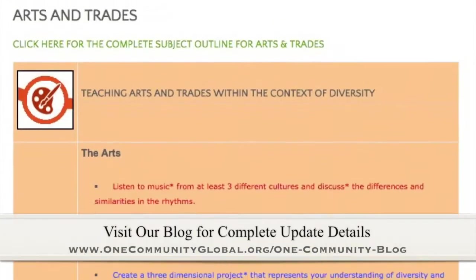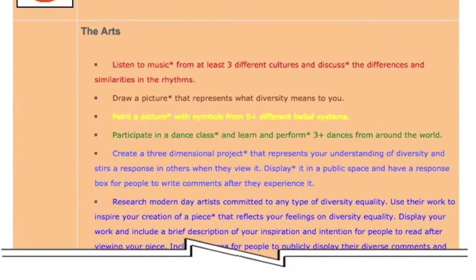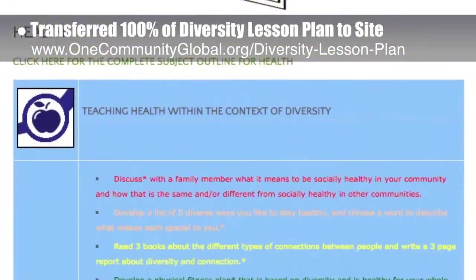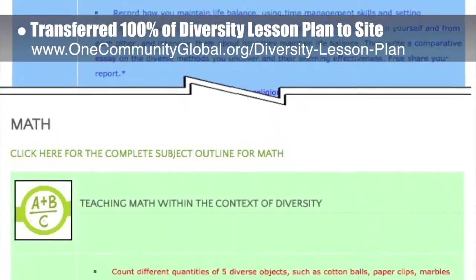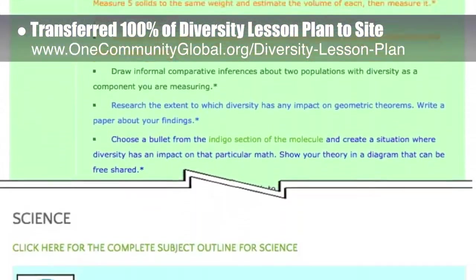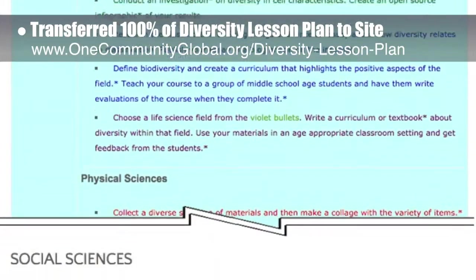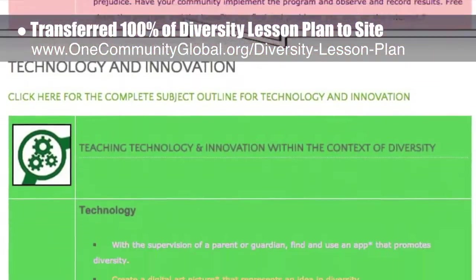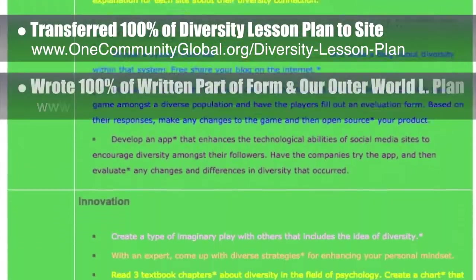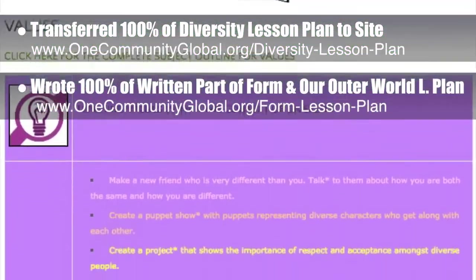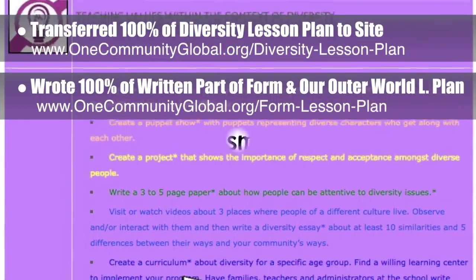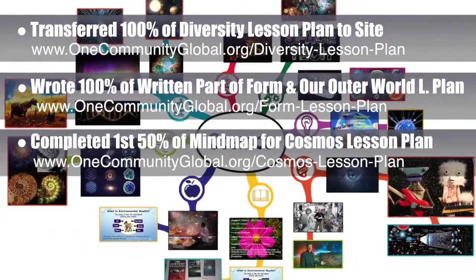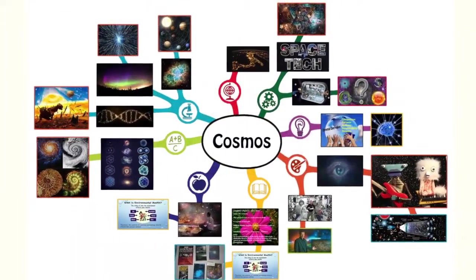This week, the core team transferred all of the written content for the diversity lesson plan to the website. This lesson plan is purposed to teach all subjects to all learning levels in any learning environment using the central theme of diversity. Behind the scenes, we completed 100% of the written part of the form in our Outer World lesson plan, and also completed the first 50% of the mind map for the Cosmos lesson plan, bringing it to 50% complete.